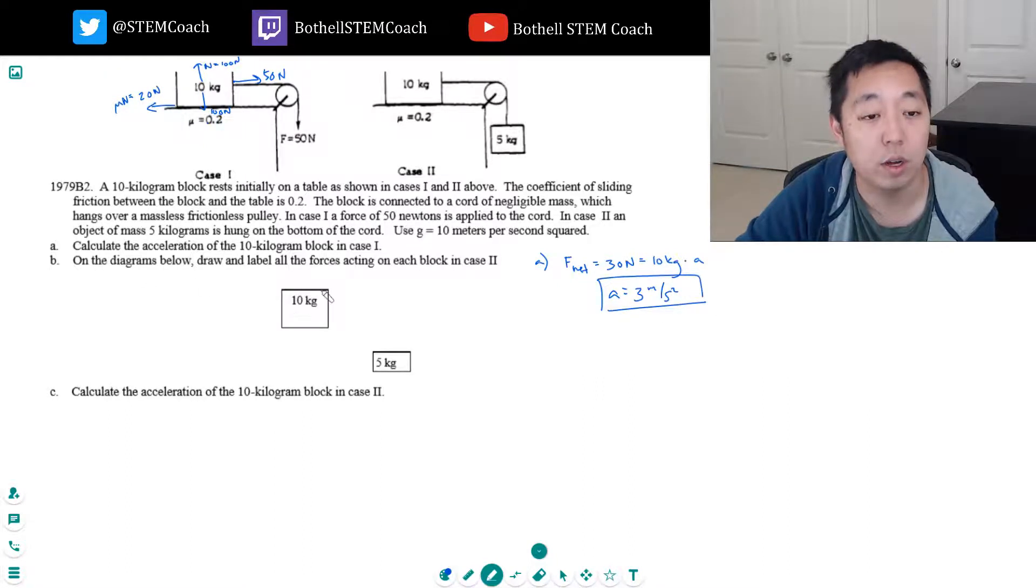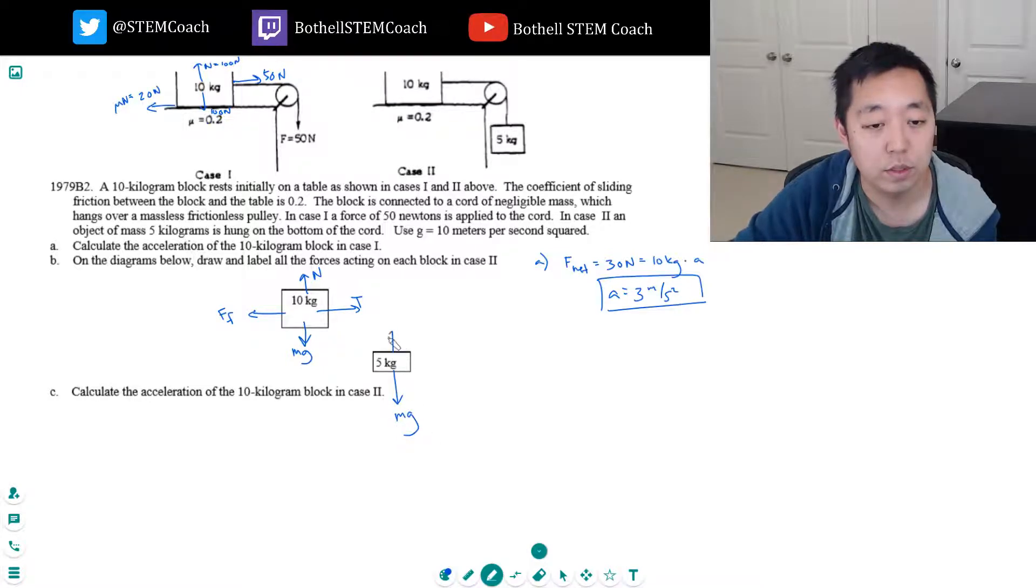On case 2, draw and label the forces on the block. So this guy's got tension acting on it, he's got 100 mg here, he's got the normal force and then the force of friction here. And then this guy has got mg also, and this mg by the way is 5 times 10 is 50 newtons. And he's got tension here. And this is 100 newtons.